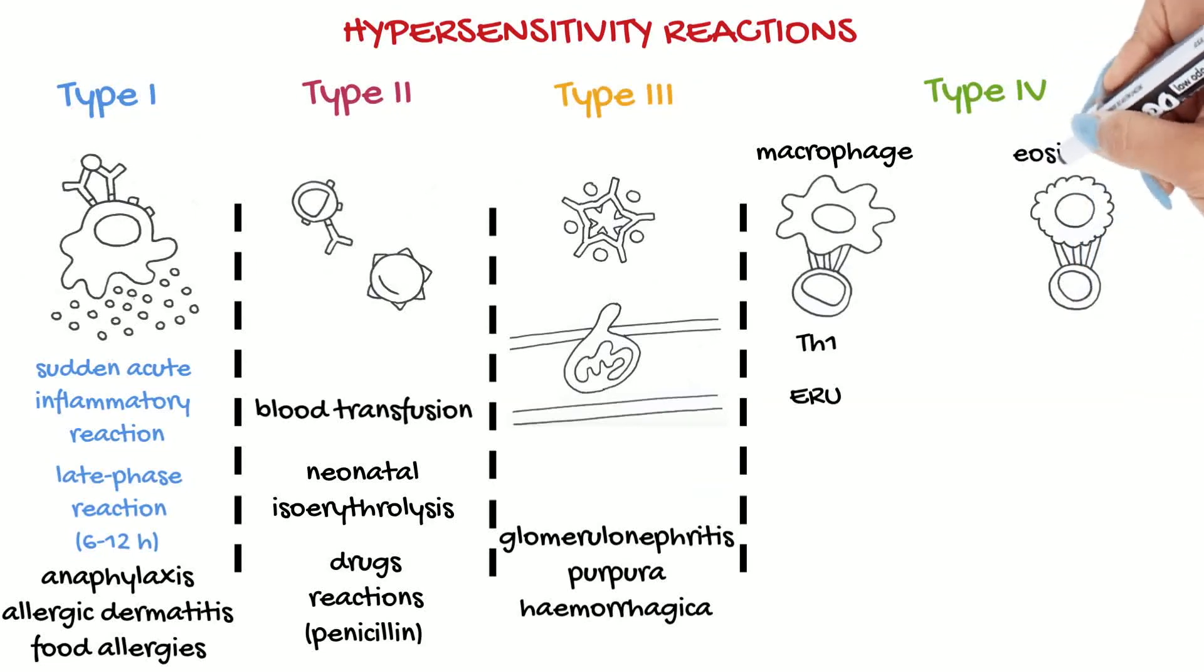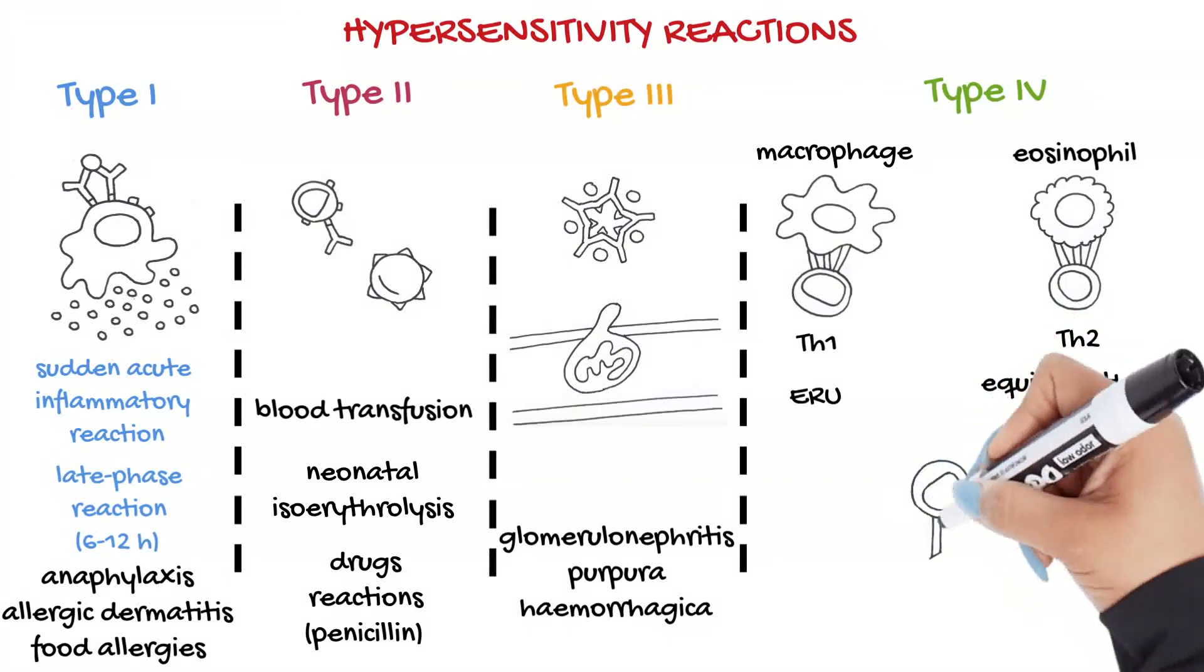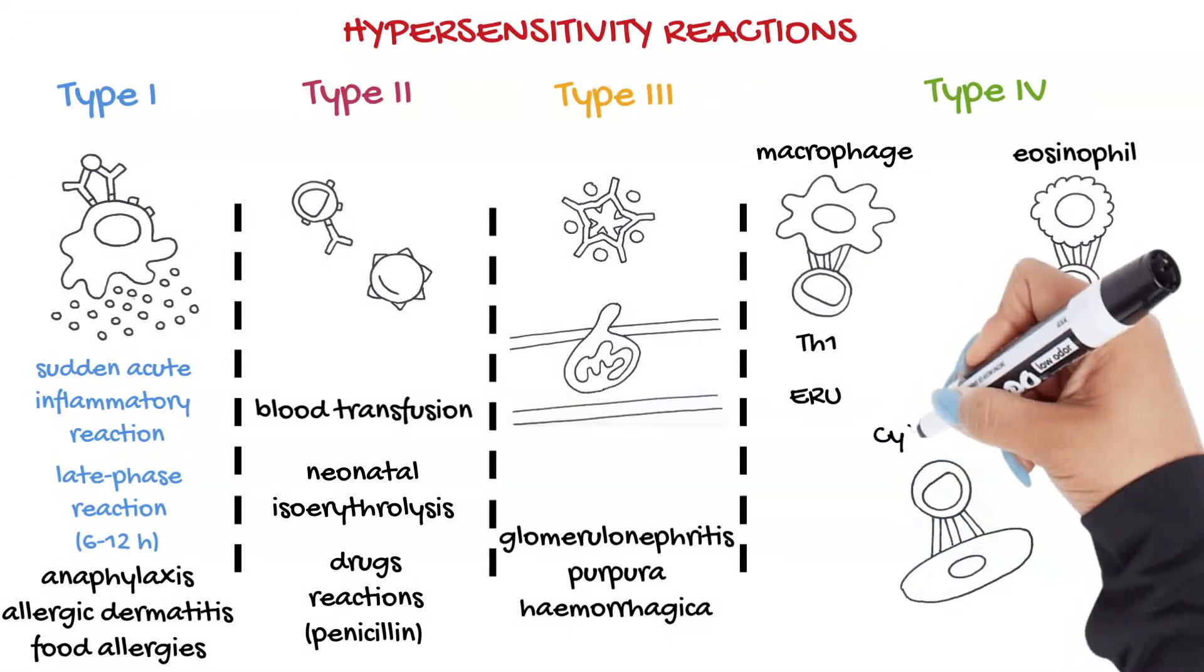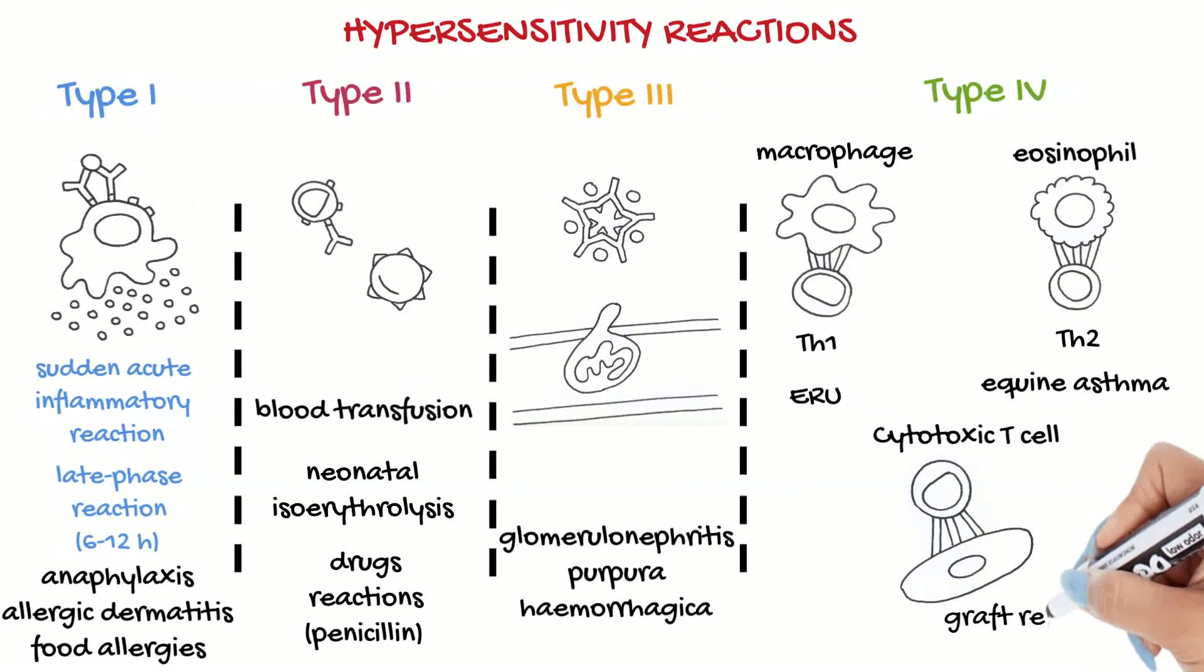Equine recurrent uveitis, for example, seems to be characterized by a Th1 response, while equine asthma by a Th2 response. Graft rejection typically involves cytotoxic T cells.